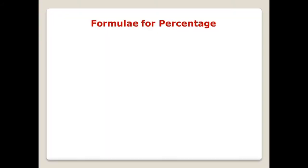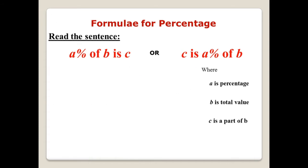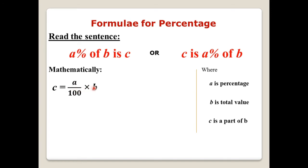Some questions will be solved related to those formulae. Coming to the formula, first of all read the sentence below: 'A is a percent of B is C,' or 'C is A percent of B.' In this sentence, A is the percentage, B is the total value, and C is a part of B. Mathematically this can be written as: C equals A over 100 multiplied by B. This is the essence of percentage.